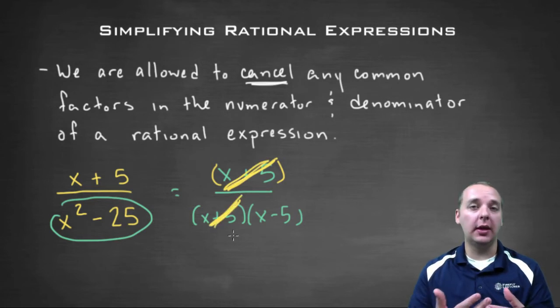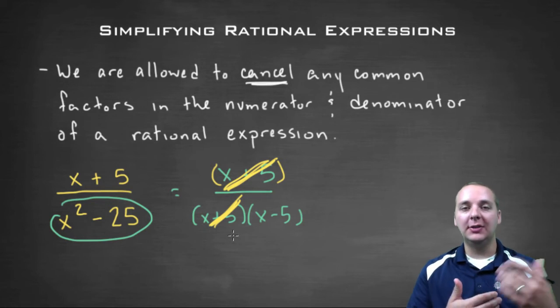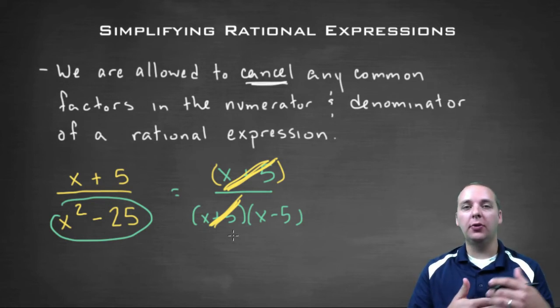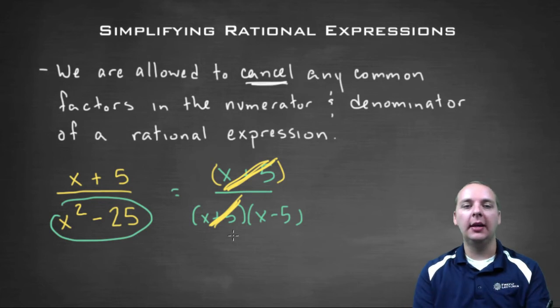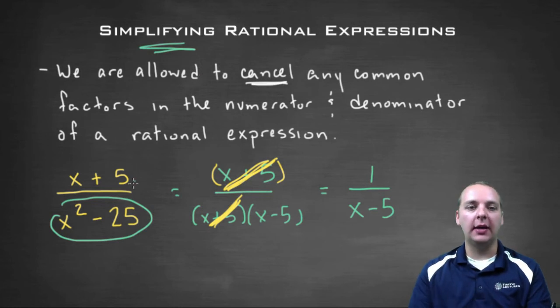similar to how you would do with a regular fraction that has numbers in it, like six twelfths or three ninths or something like that. You can actually cancel those entire factors and reduce or simplify the rational expression. So this one would end up being one over just x minus five. You can simplify rational expressions by canceling common factors that you have like this.